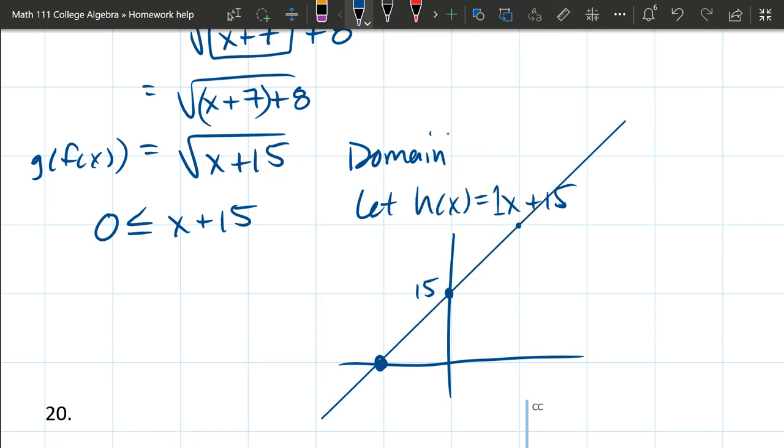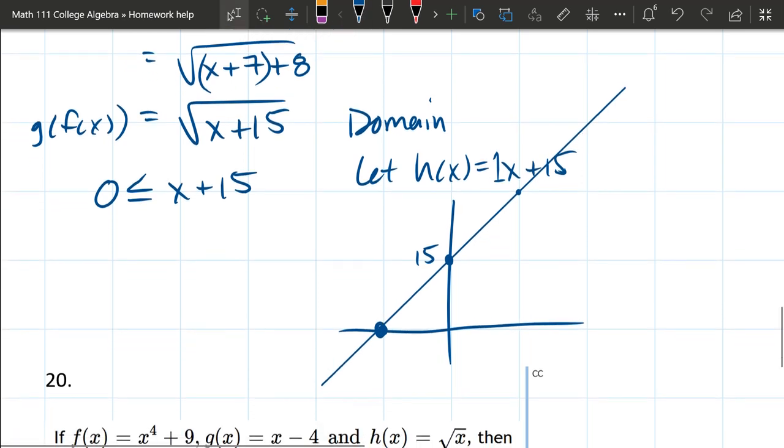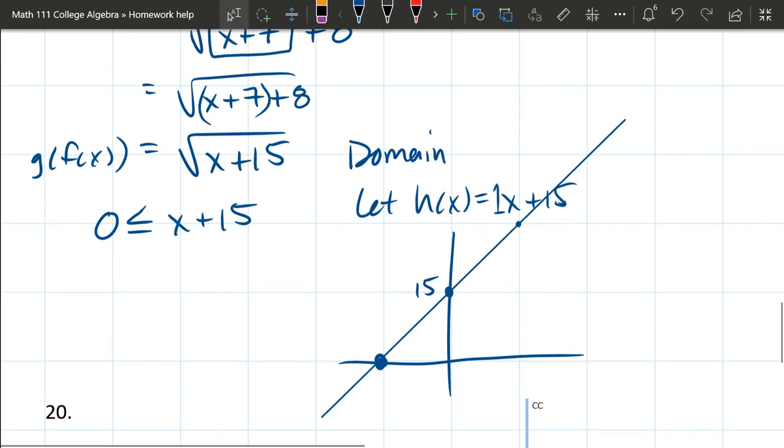The only question is where do we hit the x-axis? If you're really comfortable with lines, you can already tell where we hit the x-axis. But let's say you're not. All we do is set h of x equal to 0. That's how we get our x-intercept. And this is an easy algebra problem. Subtract 15. Negative 15. And if you knew negative 15 before, congratulations. But we just did a quick x-intercept review right there.